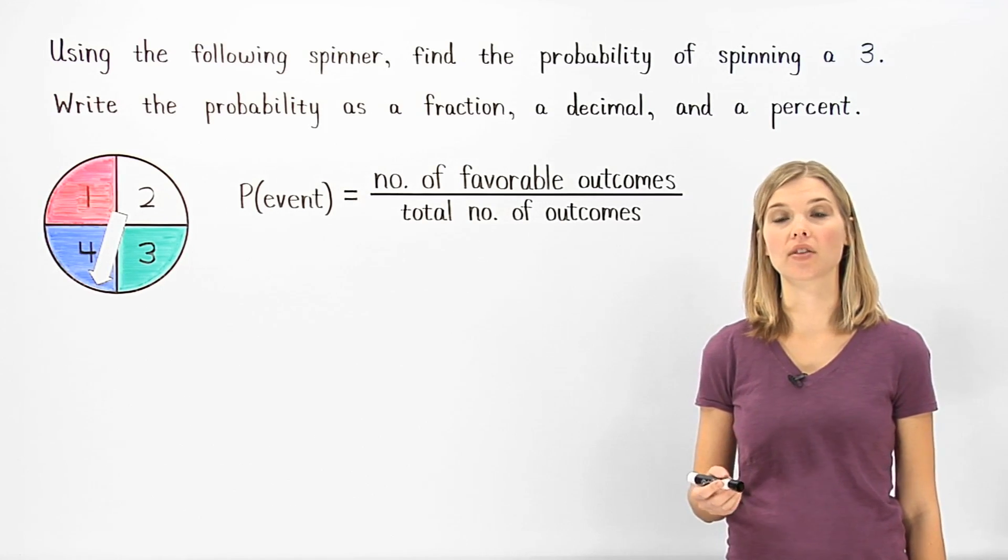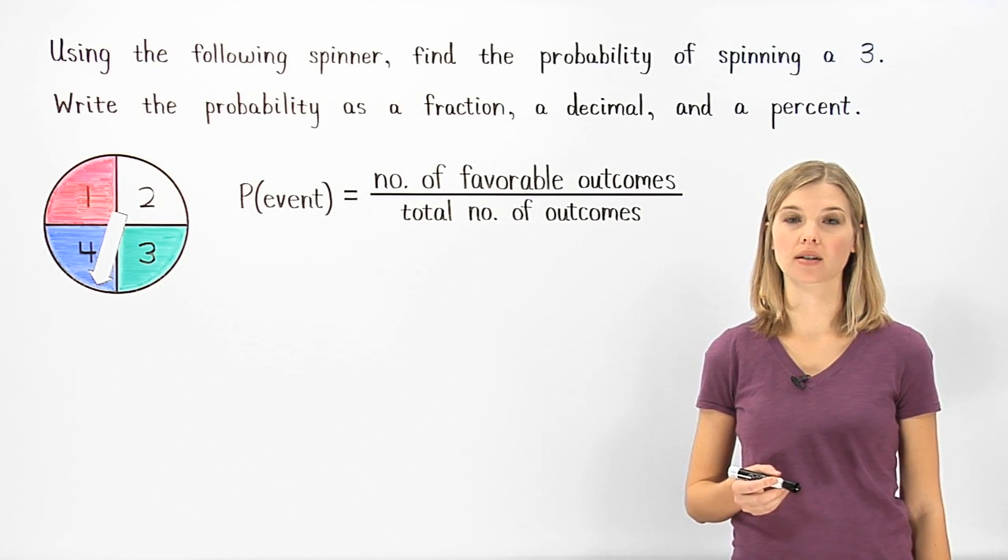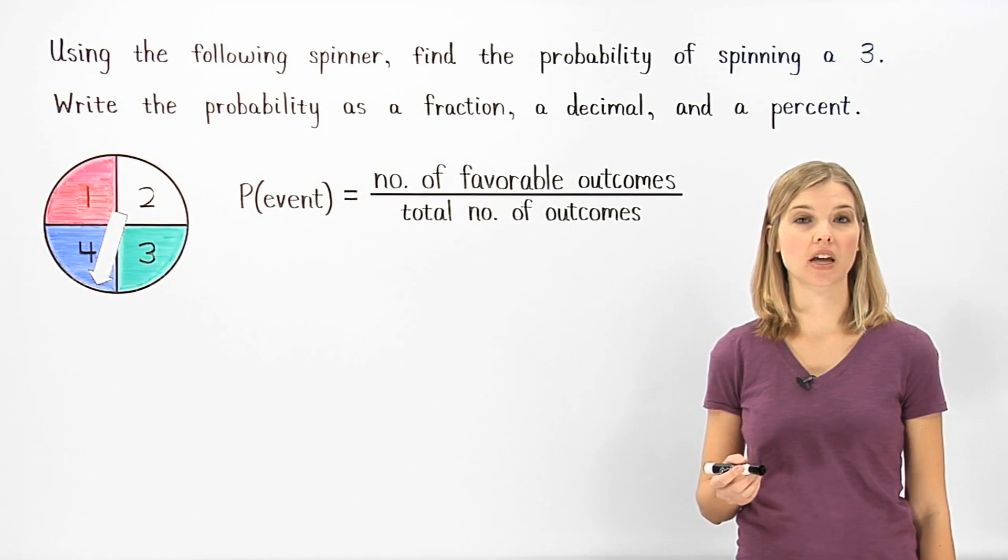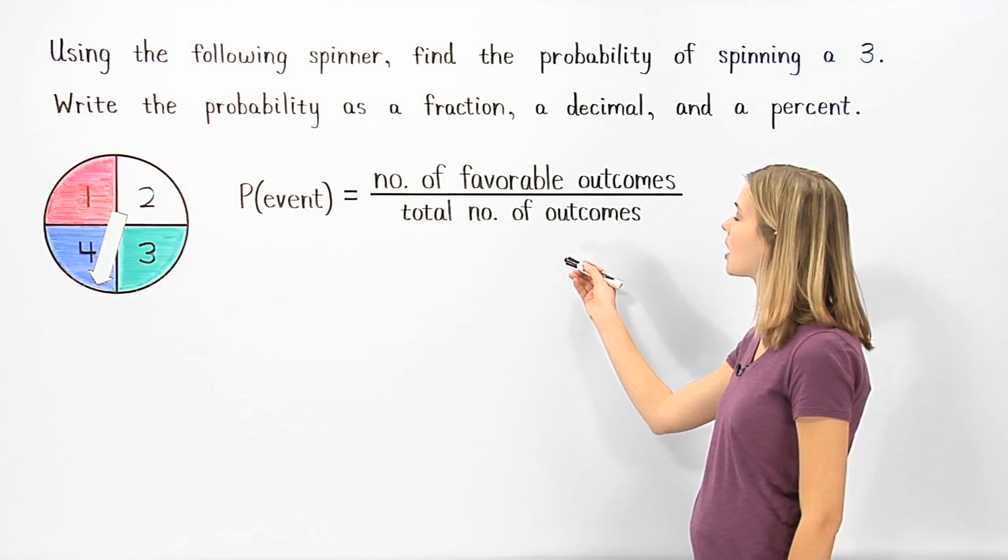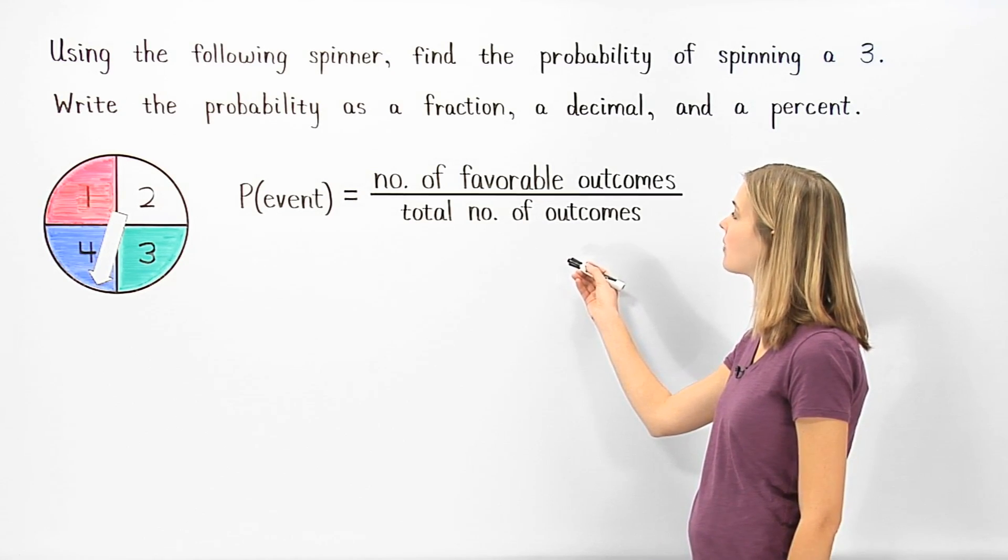Probability is the likelihood that a given event will occur, and we can find the probability of an event using the ratio number of favorable outcomes over total number of outcomes.